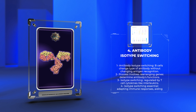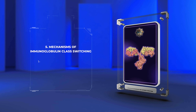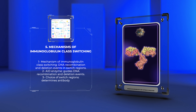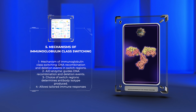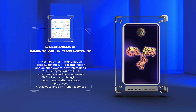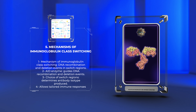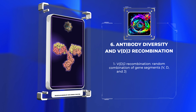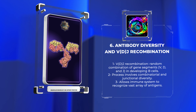This switching process is essential for adapting immune responses to different pathogens and aiding antigen clearance. The mechanism of immunoglobulin class switching involves DNA recombination and deletion events within switch regions, guided by the AID enzyme. The choice of switch regions determines the antibody isotype produced, allowing tailored immune responses and immune balance.